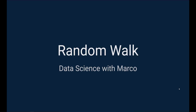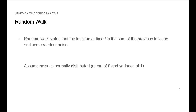Let's now introduce the random walk model. The random walk model states that the location at time t is the sum of the previous location and some random noise. In this case, we assume that the noise is normally distributed, so it has a mean of 0 and a variance of 1.